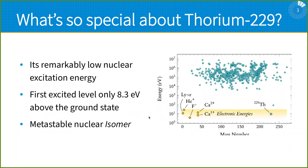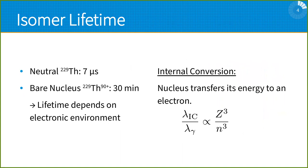What's so special about thorium-229? This can be summarized very briefly: it has a remarkably low nuclear excitation energy. Its first excited nuclear level is only 8.3 eV above the ground state, and it is a metastable state — what nuclear physicists call isomers. To illustrate how unique this nucleus is, we can look at this figure to the right where the green dots are all known nuclear isomers. On the y-axis, we have a logarithmic energy scale, and you can see they are usually between 10⁴ to 10⁷ eV. This thorium nucleus stands out with its energy being in the range of usual electronic energies.